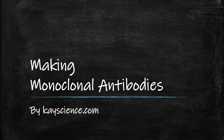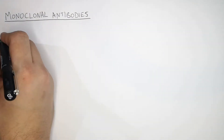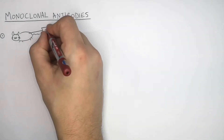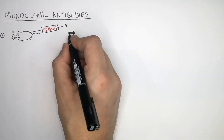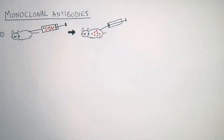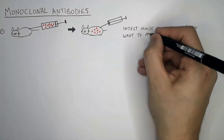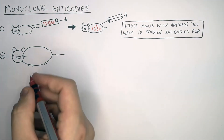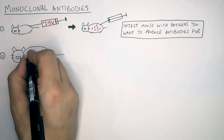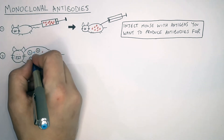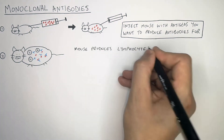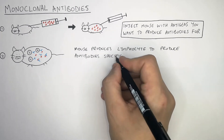Making Monoclonal Antibodies by KScience.com. You inject the mouse with the chosen antigen that you want to produce monoclonal antibodies for. These antigens have now been injected into the mouse and are present in the bloodstream. The mouse's B lymphocytes are now going to produce specific antibodies for that antigen.